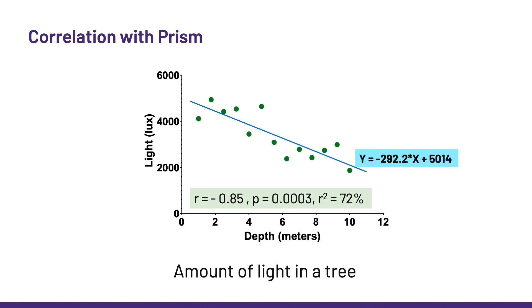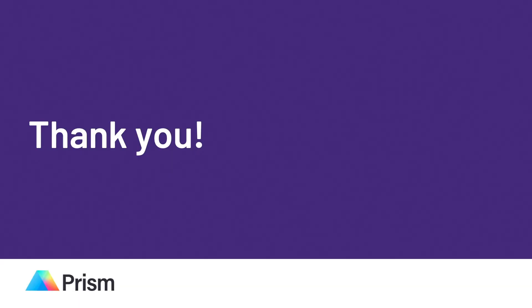And Prism gives us this graph, summarizing quite nicely, both visually and in numbers, the strong, negative, and significant relationship between depth and light in a tree. Thank you for listening, and don't forget, stats don't have to be scary!